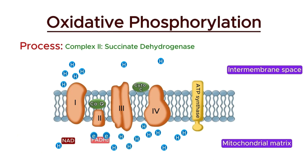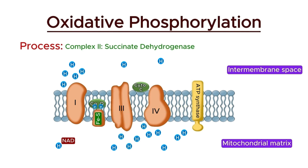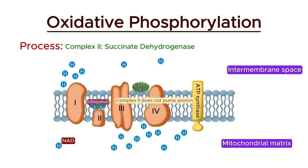Next, the electrons from FADH2 are transferred to a series of iron-sulfur clusters within complex 2. Like the first stage, these clusters facilitate the transfer of electrons to ubiquinone. Finally, the electrons are transferred to ubiquinone, reducing it to ubiquinol. However, it's important to note that, unlike complex 1, complex 2 does not pump protons across the membrane. Complex 2 contributes to the electron transport chain by supplying electrons from FADH2 to ubiquinone without contributing directly to the proton gradient, ensuring the continued flow of electrons through the chain.